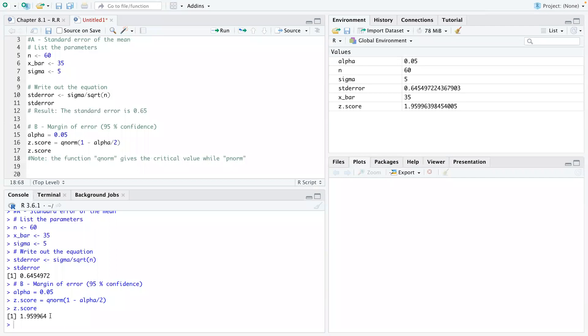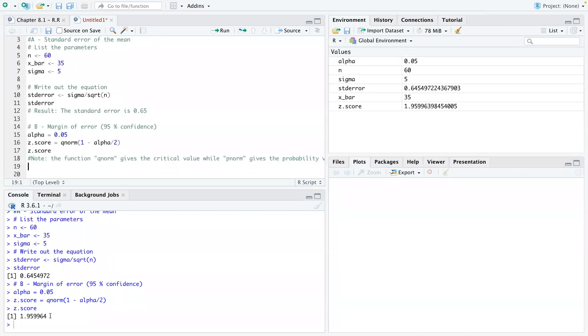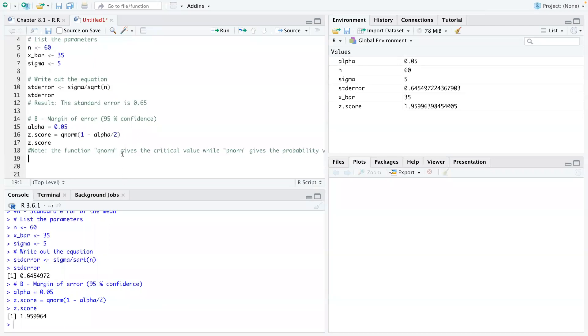And then there's another one which is pnorm, that gives us the probability value. But for now, we're not really interested in pnorm yet. We'll get to a stage where I'll show you guys how to use pnorm. But we're interested in the critical value, which is 1.96.